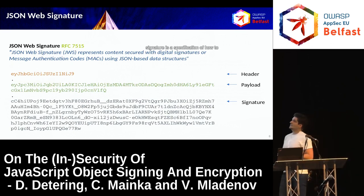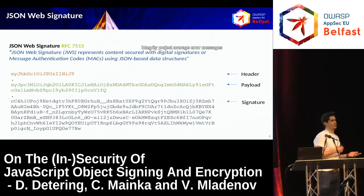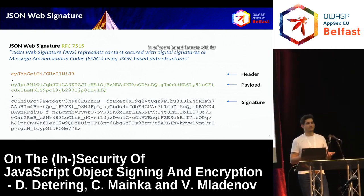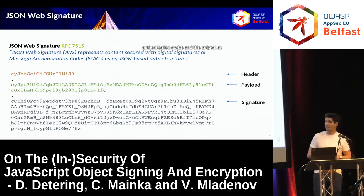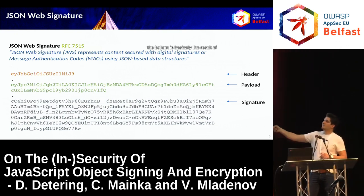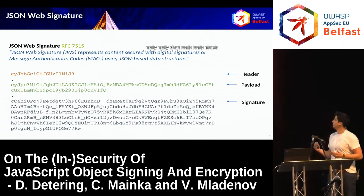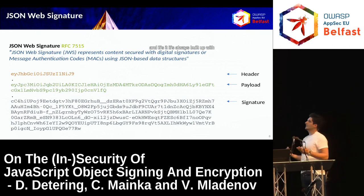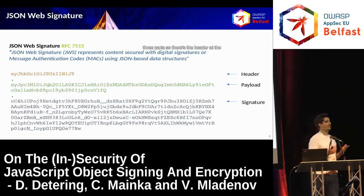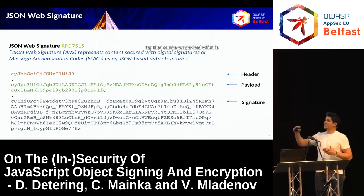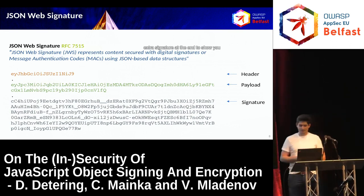The JSON Web Signature is a specification of how to integrity-protect arbitrary messages in a JSON-based format with digital signatures or message authentication codes. This token at the bottom is really short, really simple, and is always built up with three parts: there's the header at the top, then comes the payload which is our message, and then comes the signature at the end.